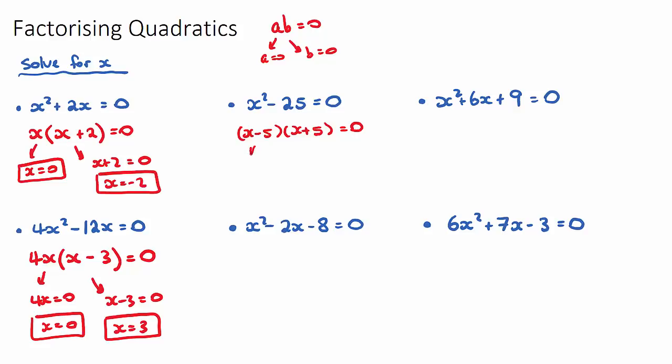Now from this step, we can say that x minus 5 can be equal to 0, or x plus 5 can be equal to 0. So therefore, x is equal to 5, or x is equal to negative 5. And if we sub those two x values into our original equation, it will prove that there were two possible answers. So be on the lookout for difference of two squares.